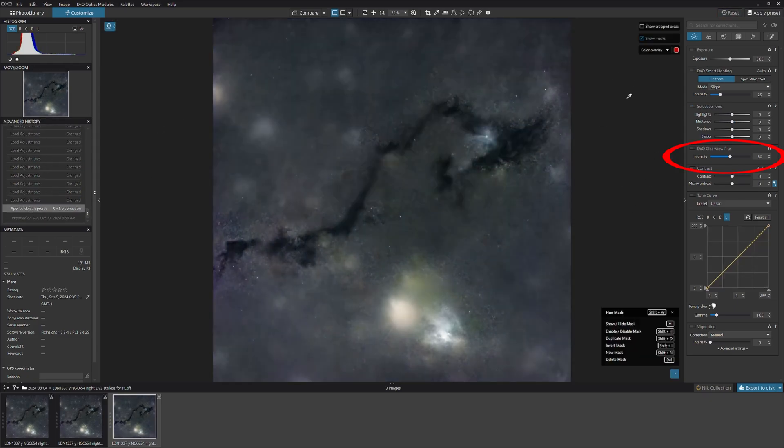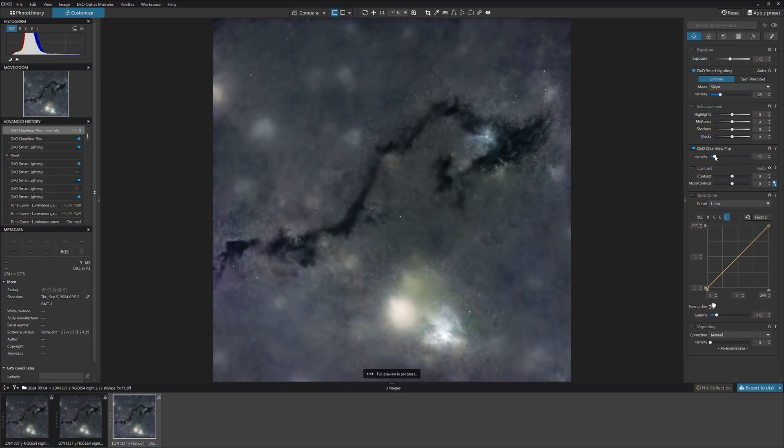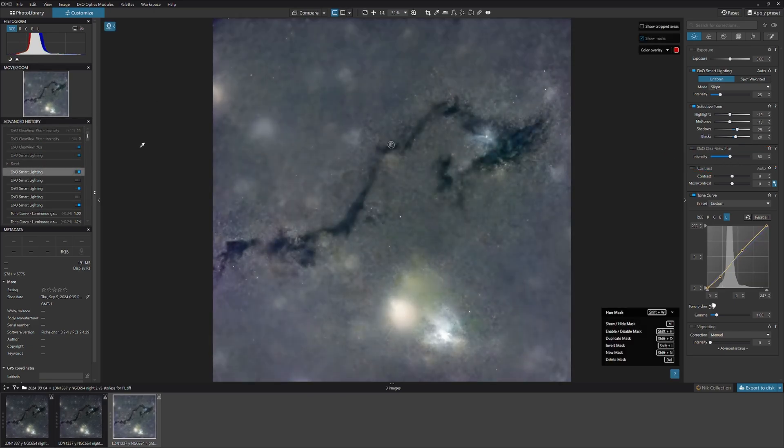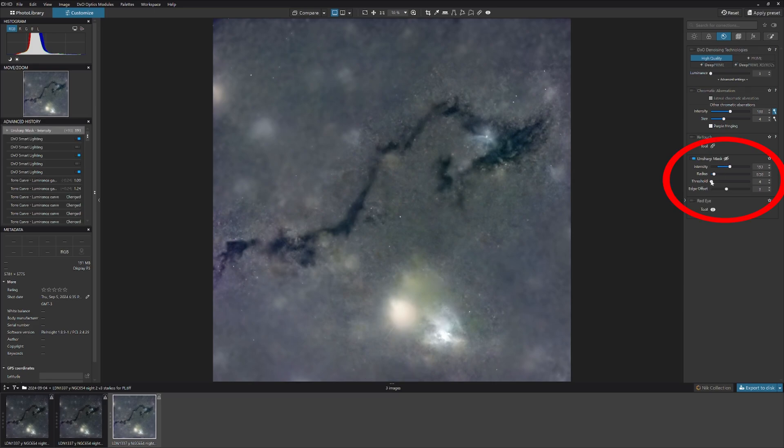Now I'm going to use the Photolab ClearView tool which is like an AI powered contrast tool. It has an amazing ability to clear up background information and get things out of the way. Now I'll sharpen up the structure within the dark nebula by using Photolab's Unsharp Mask.